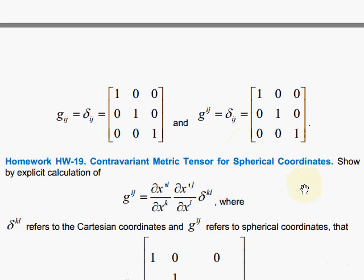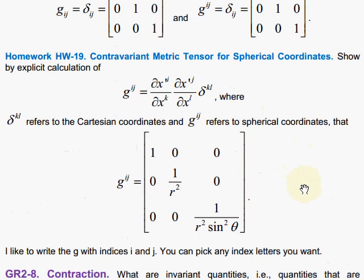Here is a little homework problem for you. Show that the contravariant metric tensor for spherical coordinates looks like this. That's very, very nice.